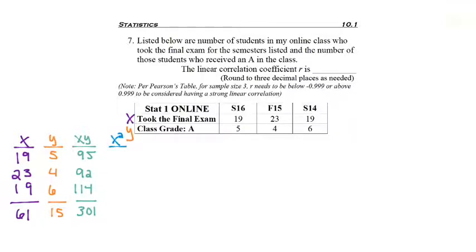Now I need to find my X squared data. So I take 19 squared to get 361, 23 squared to get 529, and 19 squared, which we already did, so we know we're going to get 361 again. Total that column, 1,251.